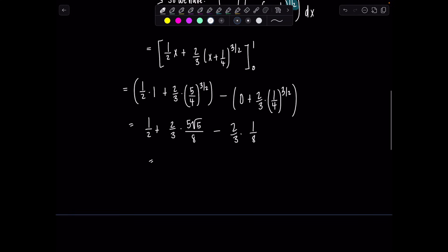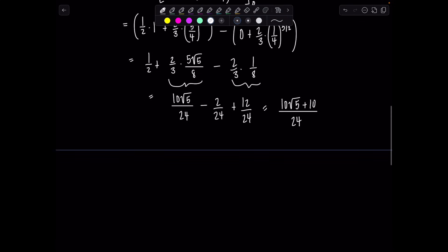And then let's clean up, so this is going to give me 10 rad 5 over 24. And then I have minus, this is 2 over 24. Don't worry, I didn't forget about that one half, that's 12 over 24. So I could write all of this as 10 rad 5 plus 10 over 24. And then just simplify, right? I could divide a 2 out from everybody. 5 rad 5 plus 5 over 12. And voila, we are done.